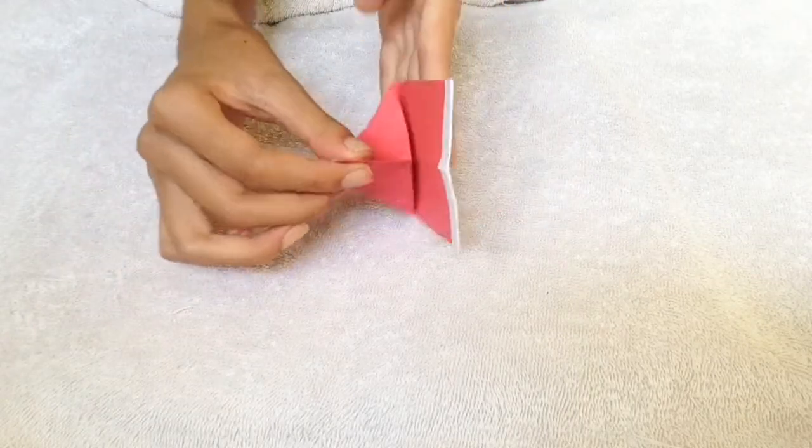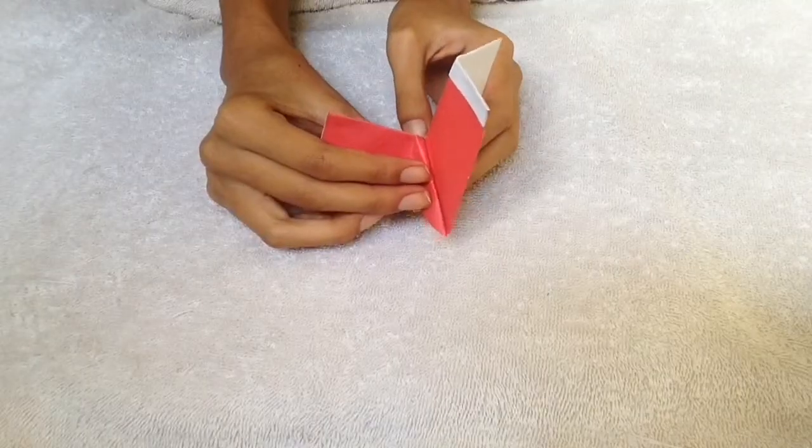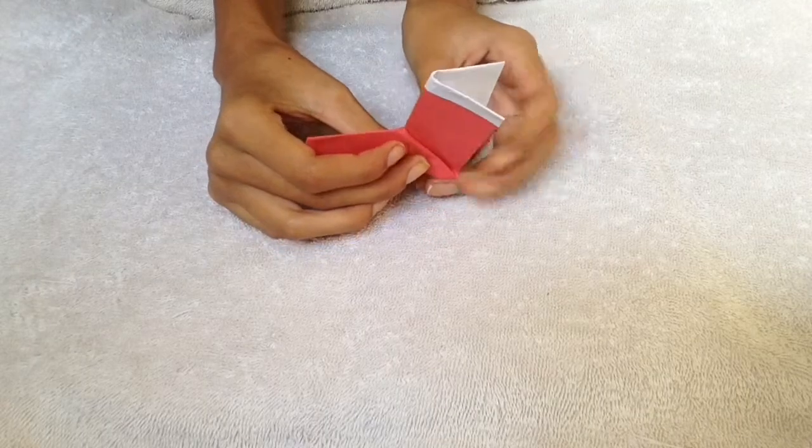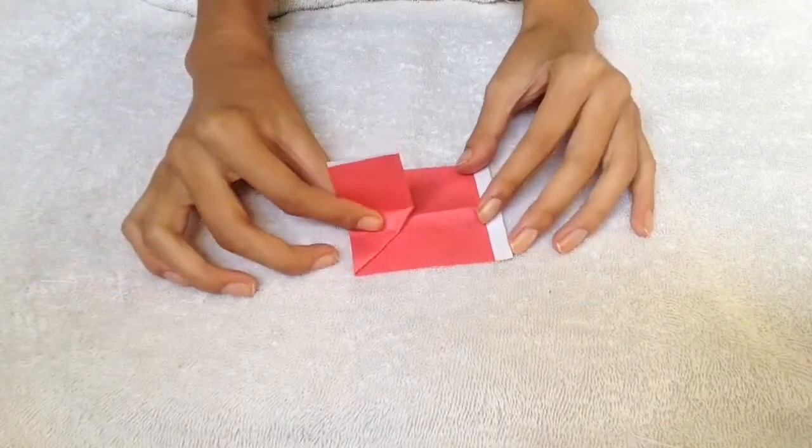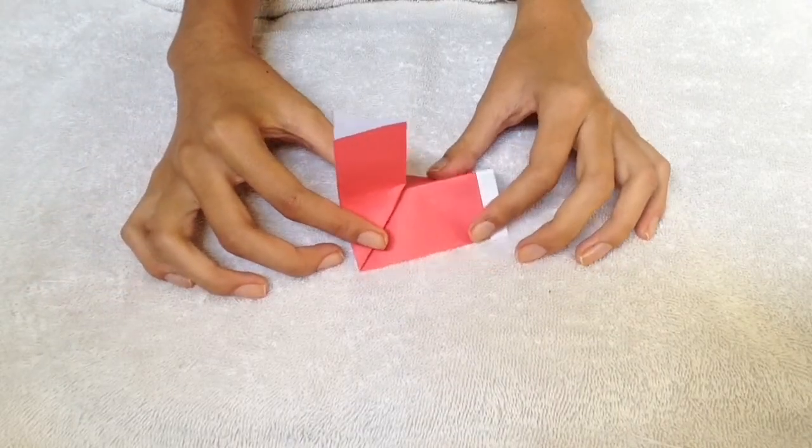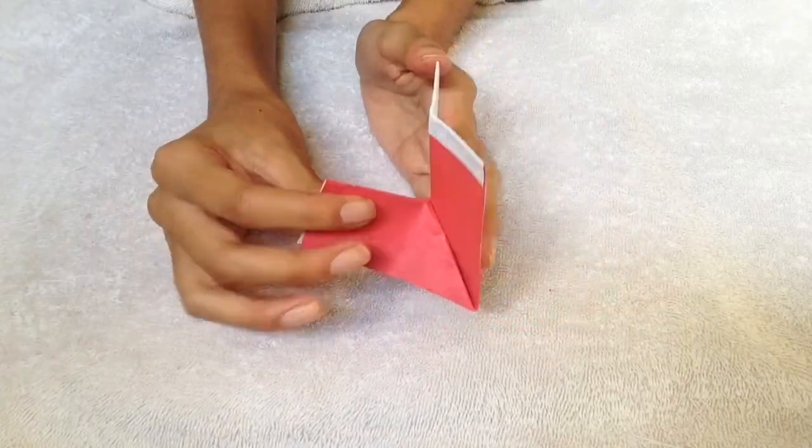This is how it should look: top view, side view, and bottom. Then just continue folding in half following the crease one more time. Let's see that one last time.